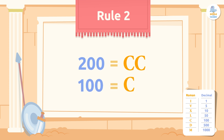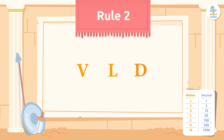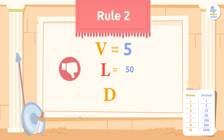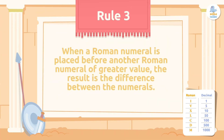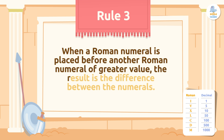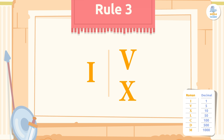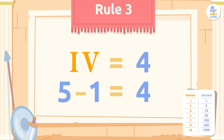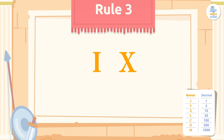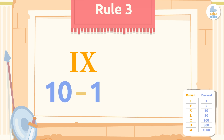The letters that cannot be repeated are V (5), L (50), and D (500). Rule 3: when a Roman numeral is placed before another of greater value, the result is the difference between the two. For example, IV means 5 minus 1, which equals 4. Similarly, IX means 10 minus 1, which equals 9.